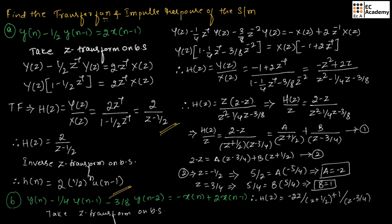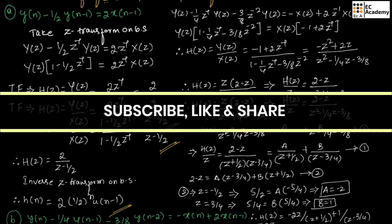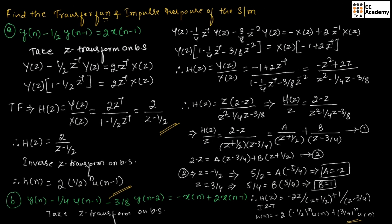For this equation, if we take the inverse Z-transform, we will get h(n) = -2 · (-1/2)^n · u(n) + (3/4)^n · u(n). So this is the impulse response of the given problem. These are the problems on transform analysis of LTI systems. I hope you have understood the topic. Thank you.